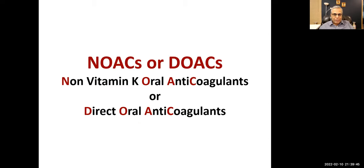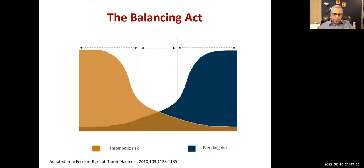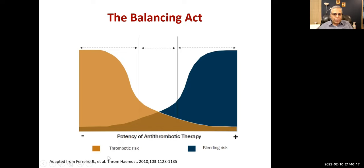Now we go to non-vitamin K oral anticoagulants, also known as direct oral anticoagulants. These anticoagulants are a double-edged weapon — if you overdose there is risk of bleeding; if you under-dose there is risk of thromboembolic phenomena. The sweet spot is the target therapeutic range. These newer drugs, the NOACs, are taken orally.